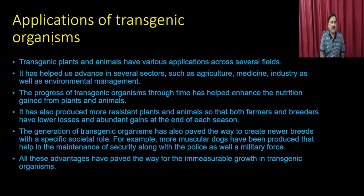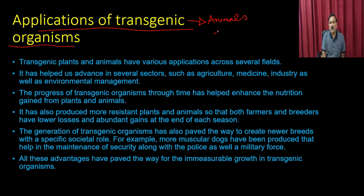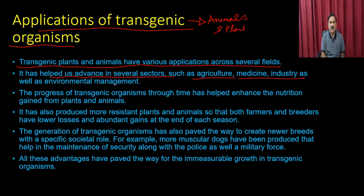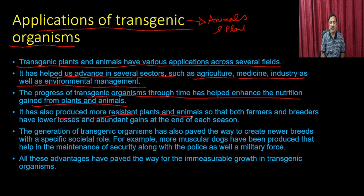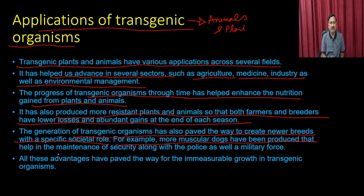Both transgenic plants and animals have various applications across several fields, advancing agriculture, medicine, the medicinal industry, and environmental management. Transgenic organisms have helped enhance nutritional gain from plants and animals, produced more resistant plant and animal varieties reducing losses for farmers and breeders, and paved the way to create newer breeds with specific social roles — for example, more muscular dogs for security alongside police and military forces.